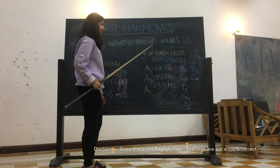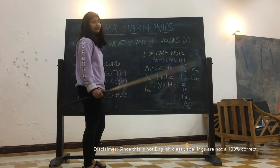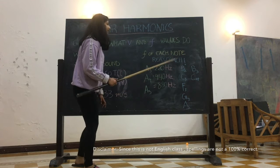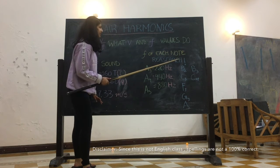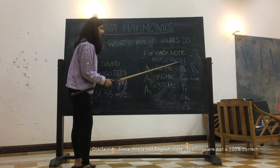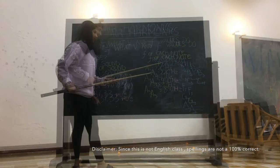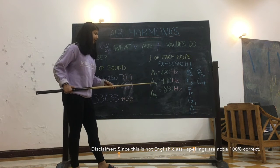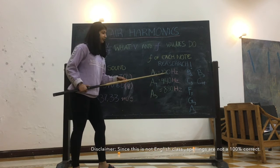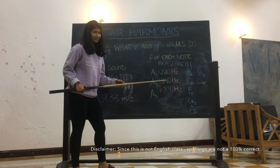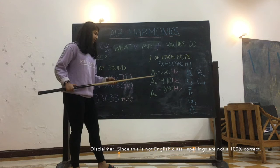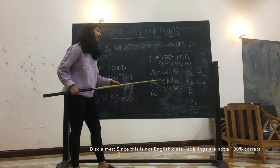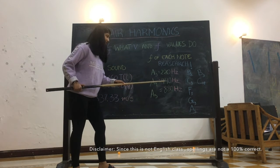Next, let's move on to frequency. For the frequency of each note, we did research as required by the inquiry lab. As we go an octave higher — from A3 to A4 — the frequency doubles. And when we go from A4 to A5, the frequency doubles again.